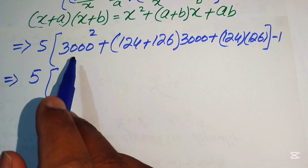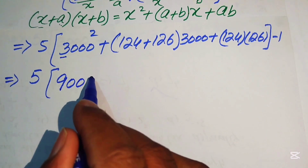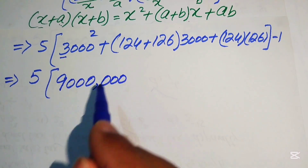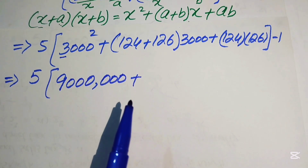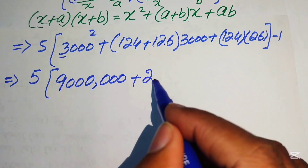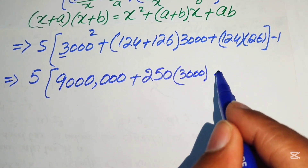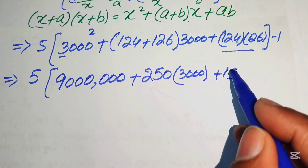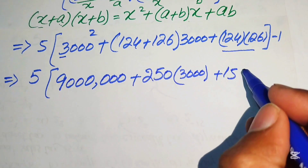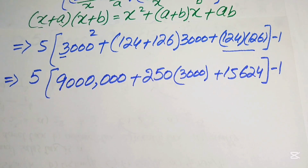To compute 3000 squared: 3 squared is 9, and doubling the three zeros gives six zeros, so 3000² = 9,000,000. Then 250 times 3000 equals 750,000. Multiplying 124 by 126 using the traditional method gives 15,624.